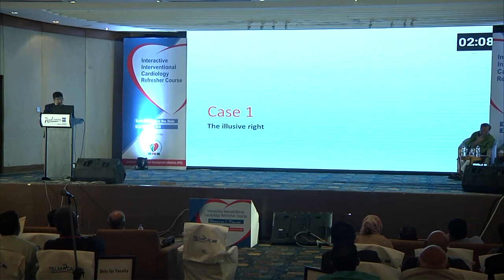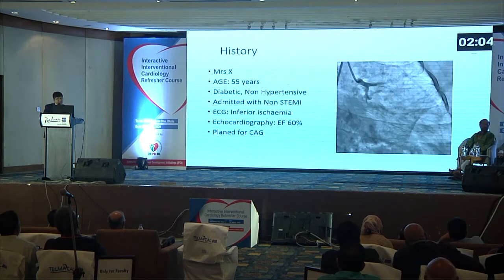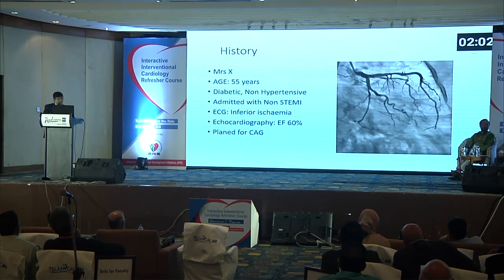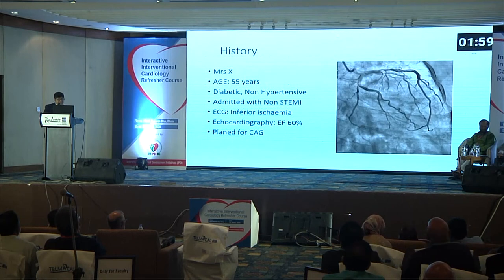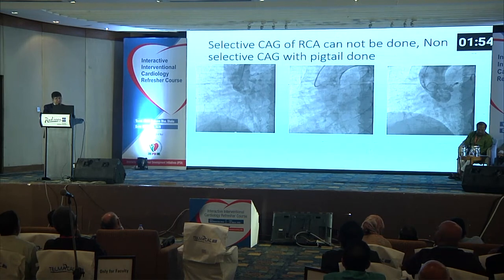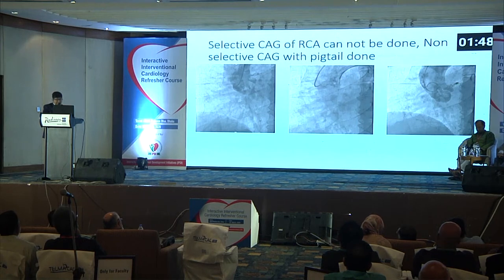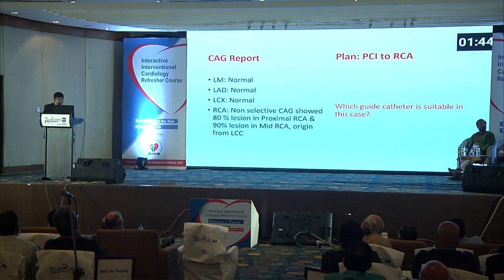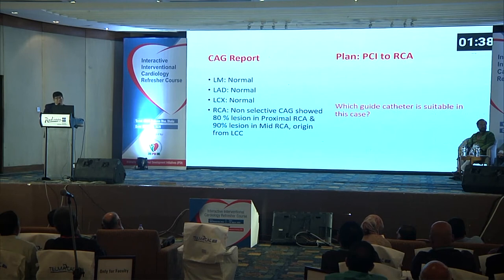I will move into some cases of anomalous coronary origin. My first case is an unusual right catheter case. A 55-year-old woman — the left system was normal, but selective angiogram of the RCA could not be done. A non-selective angiogram through the pigtail catheter showed that the RCA arises from the left coronary sinus. Our plan was to do a PCI to RCA — which guide catheter is suitable for this case?